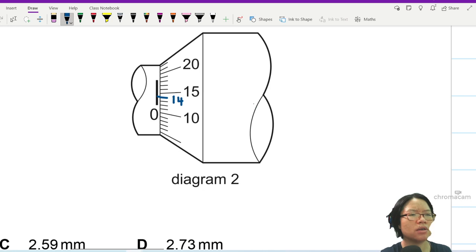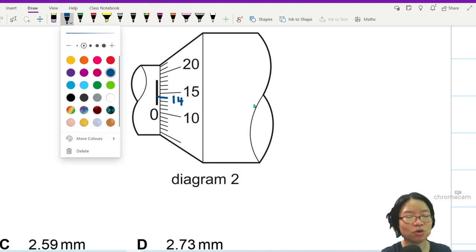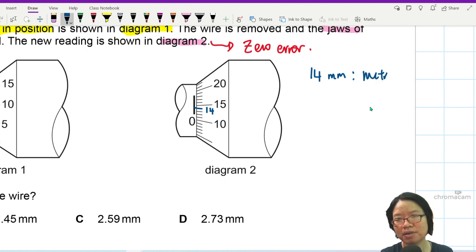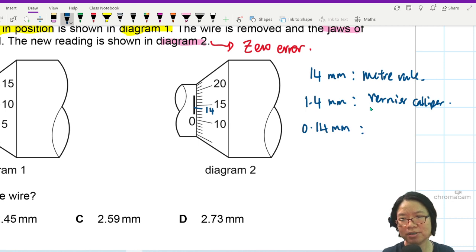And you may think to yourself, 14 what? Well, you chill first. For people with not good memory, people like me, the way I do it is I just think it can't be 14 mm because that's not sensitive enough for micrometer. In fact, 14 mm is meter rule. Meter rule can read to 14 mm because 14 mm is 1.4 cm. So that I think 1.4 mm is vernier caliper. So this is actually 0.14 mm micrometer.